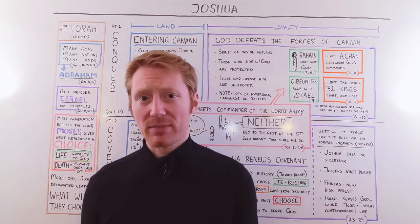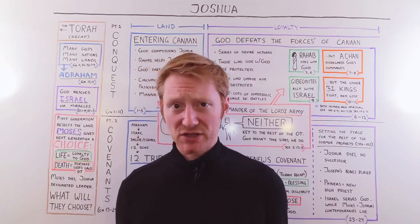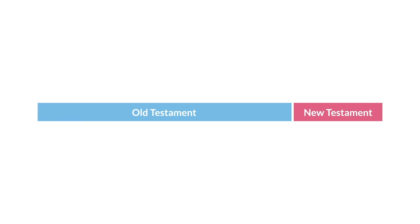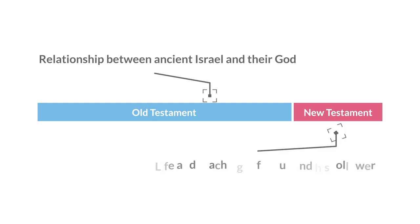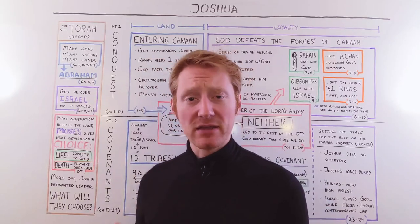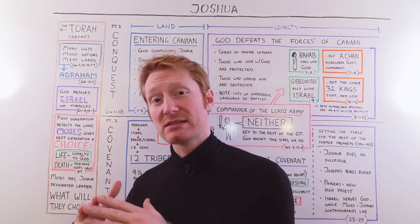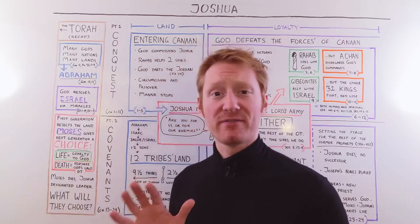If you're familiar with the Bible, then you know that the Bible falls into two large sections. There's the Old Testament, which looks at the relationship between ancient Israel and their God, and then there's the New Testament, which looks at the teachings and life of Jesus and those who followed after him. The book of Joshua falls early on in the Old Testament — it's the sixth book, right after the first five.